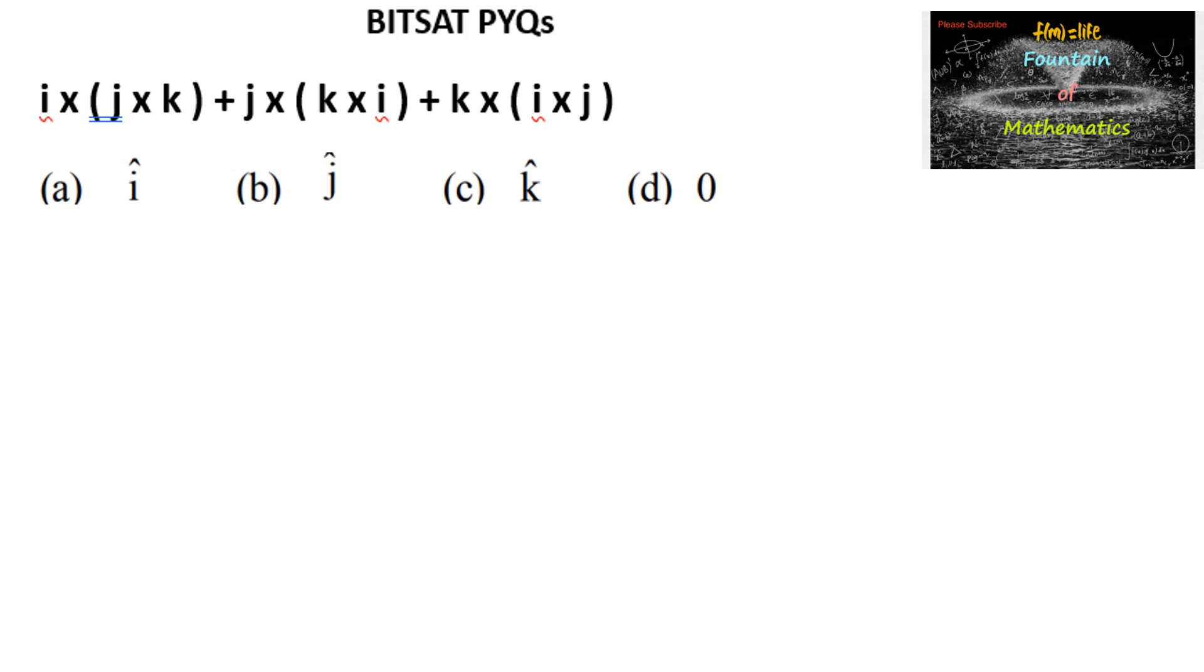Let's simplify i cross j cross k plus j cross k cross i plus k cross i cross j, where i, j, k are the unit vectors along the coordinate axes x, y, z.